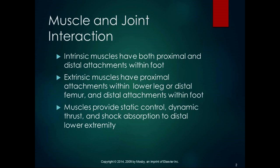We're going to classify the muscles of the distal lower extremity as intrinsic or extrinsic — and we do the same on the upper extremity, so we have a similar setup there. Intrinsic muscles have both proximal and distal attachments within the foot — they're shorter, smaller, and do things inside the foot. Extrinsic muscles have proximal attachments within the lower leg or distal femur, like the gastrocnemius, and distal attachments within the foot. The muscles of the ankle and foot provide static control, dynamic thrust, and shock absorption to the distal lower extremity.